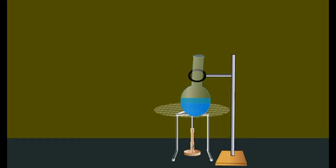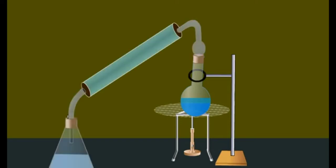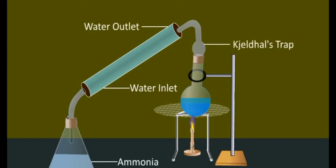Carbon and hydrogen are oxidized to carbon dioxide and water vapors respectively, while nitrogen is converted into ammonium sulfate. CO2 and water vapors escape through the loose stopper whereas ammonium sulfate remains in the flask.